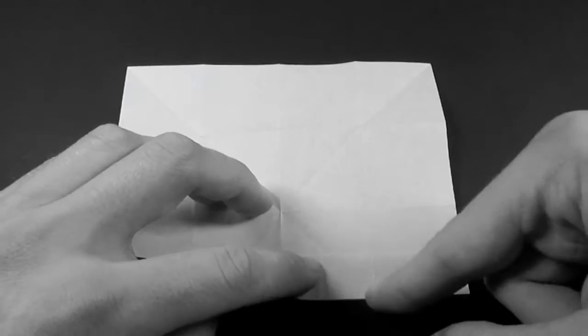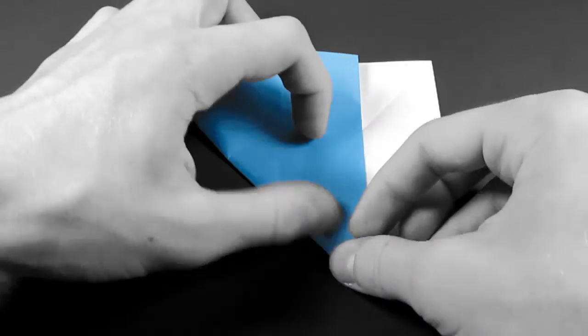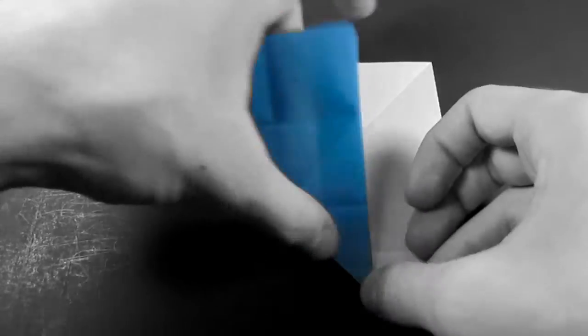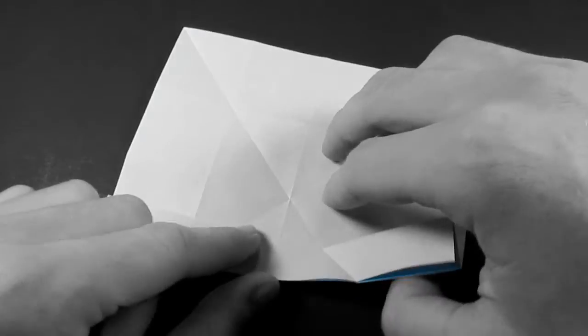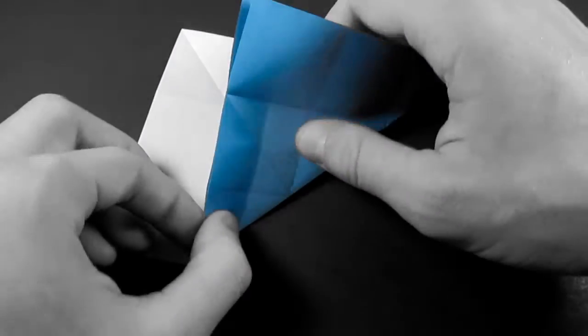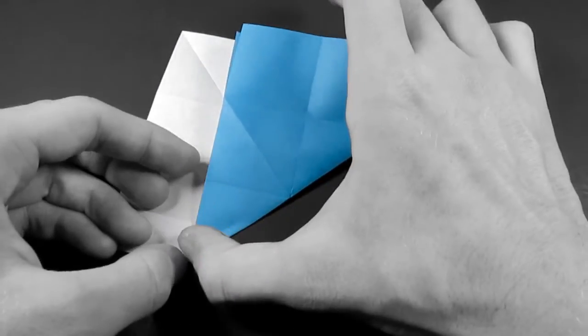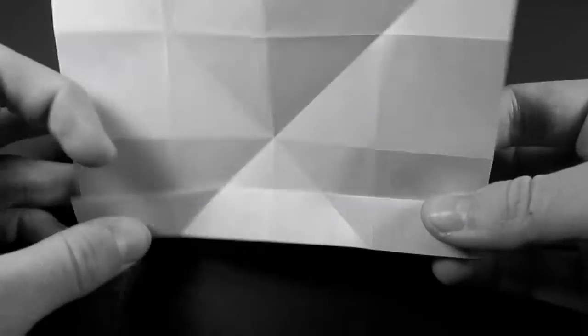Okay, and now we're just going to reinforce the creases we already made by valley folding through that. And you only have to crease near the bottom here. And you should get something like that.